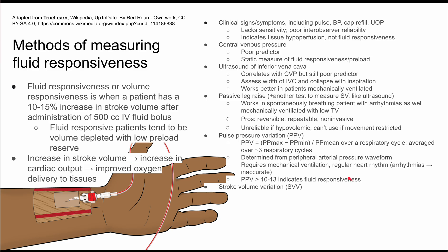This is why mechanical ventilation and a regular heart rhythm are so important for PPV. The passive leg raise is useful in patients who do not meet these criteria, but it tends to be less accurate and less reliable than pulse pressure variation in a mechanically ventilated patient with a regular heart rhythm.